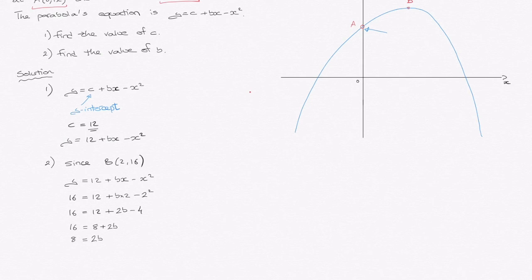Finally, I can see that b is being multiplied by 2, so if I divide both sides by 2, I end up with 8 over 2 equals b, and therefore 4 equals b, or b equals 4.